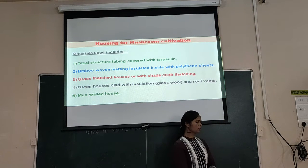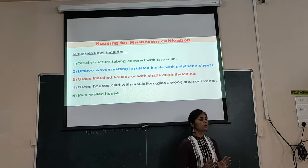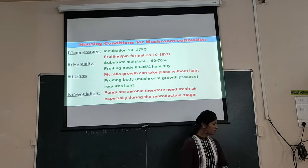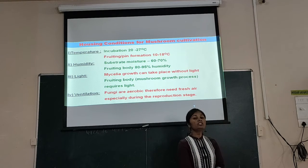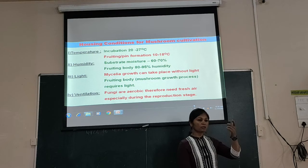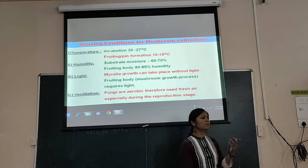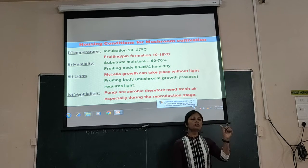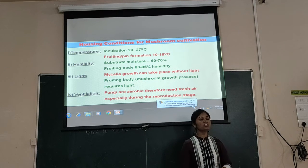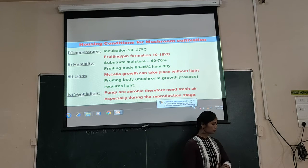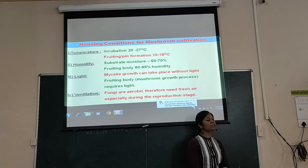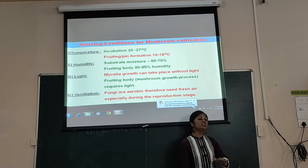For housing, mushrooms can be grown anywhere — even in a small room or a small shed. The basic growth conditions required are maintaining proper temperature, humidity, light, and ventilation. For the inoculation stage, the required temperature is around 20 to 27 degrees centigrade, and no lighting is required at the initial stage.